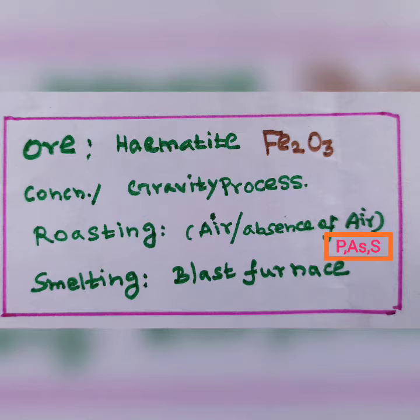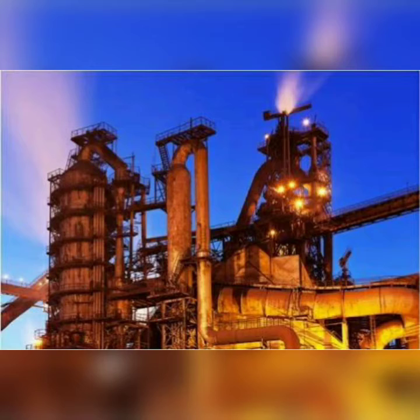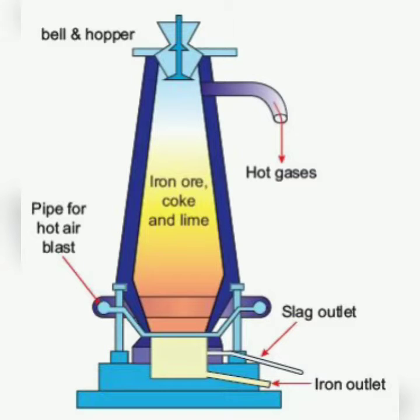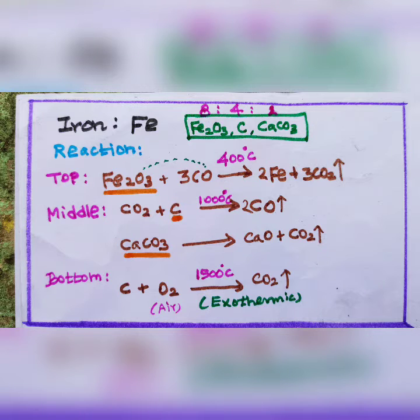Next step, smelting. Using blast furnace, we get molten iron. In blast furnace, we feed ore, coke and calcium carbonate in the ratio of 8 is to 4 is to 1.